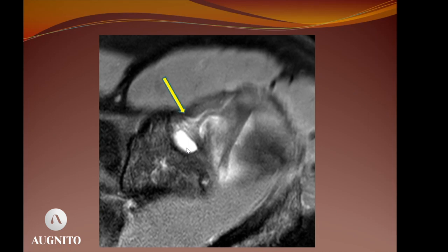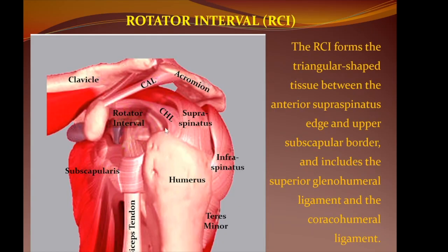The superior glenohumeral ligament is actually seen in the topmost cuts in the axial sequence, along with the intra-articular biceps. One model to show the space again: this is the rotator interval, the triangular space bordered by the coracoid process, the supraspinatus above and the subscapularis below.